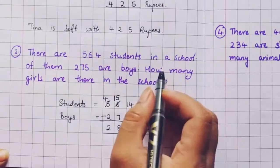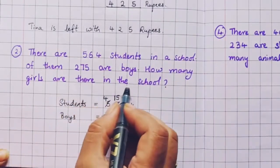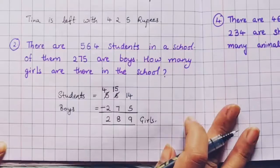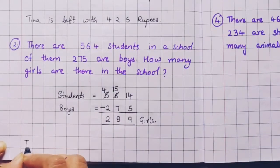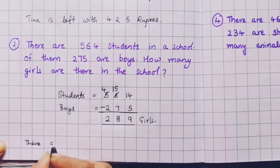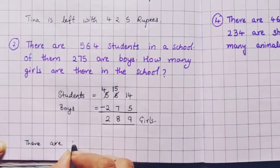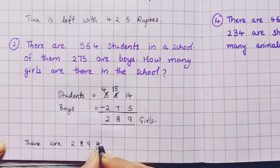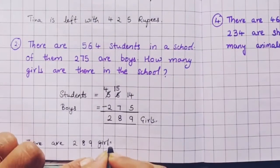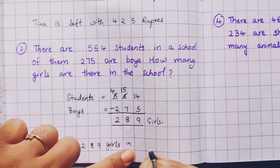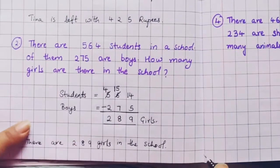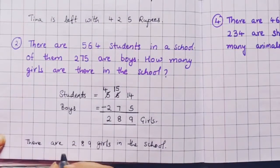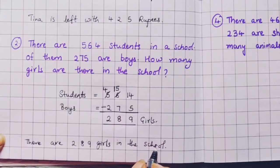So how many girls are there in the school? There are 289 girls in the school.